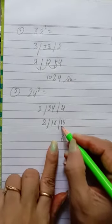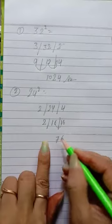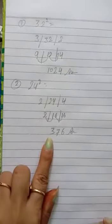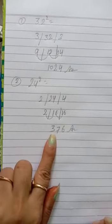Here is 6. 6 plus 1 is 7, 1 plus 2 is 3. Your answer will be 376.